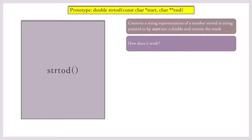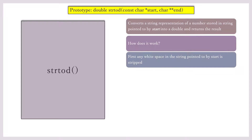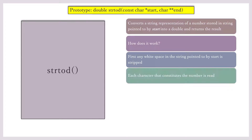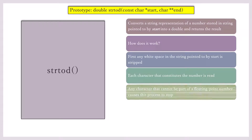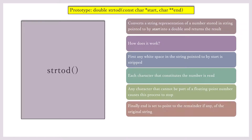But how does it work? First, this function will strip any white space in the string pointed to by start. Then it will take each character that constitutes the number and read it. It will stop reading when it encounters a character that cannot be part of a double or floating point number, and then it will report the remainder.